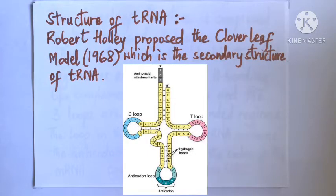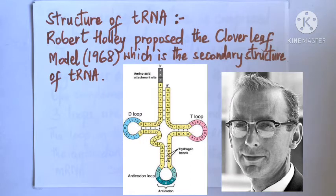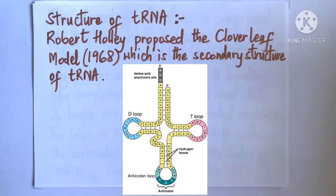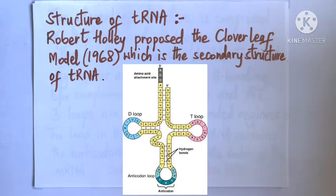The secondary structure of tRNA was first proposed by American biochemist Robert Holley in 1968, who shared the Nobel Prize with Marshall Nirenberg and Har Gobind Khorana. Since the secondary structure of tRNA resembles a cloverleaf, Robert Holley proposed it as the cloverleaf model. In this cloverleaf secondary structure, tRNA is mainly comprising four stems and three loops. The four stems are double-stranded regions formed by hydrogen bonding between complementary base pairs, and the three loops are single-stranded regions.